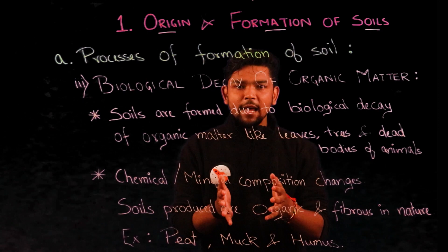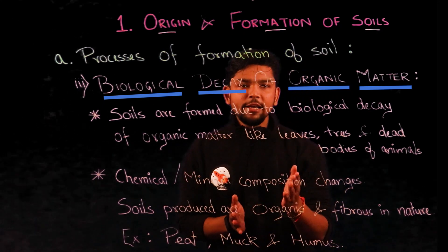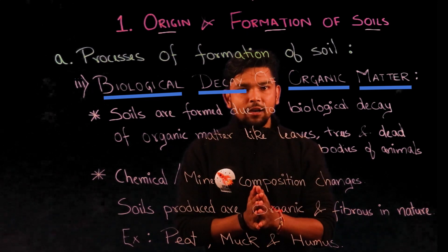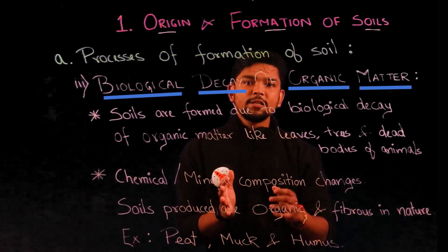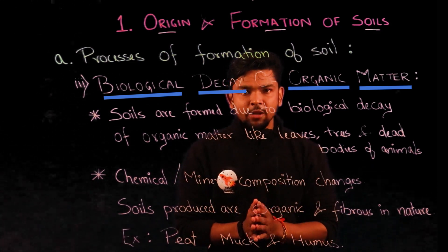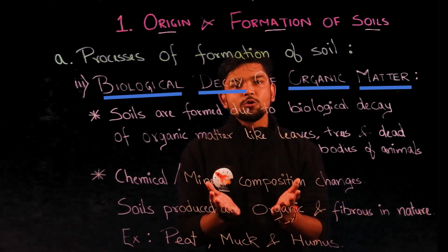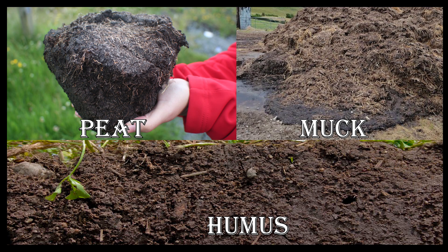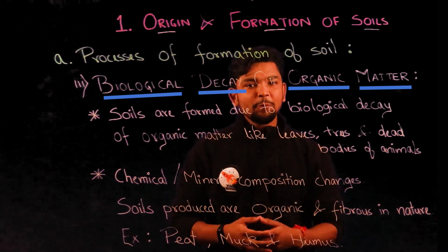Coming back to the last process of formation of soil — in this type, soils are formed due to biological decay of organic matter like leaves, trees, dead bodies, and organic waste of animals. These soils are also known as cumulus soils. They are extremely compressible, organic, and fibrous in nature, and hence their use is best avoided. The chemical and mineral composition is different from that of the organic matter. Examples of cumulus soil are peat, muck, and humus.